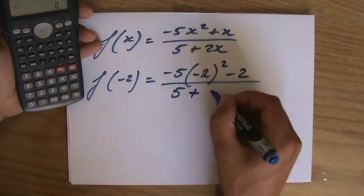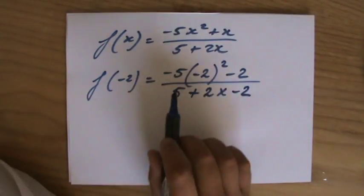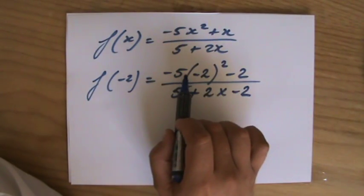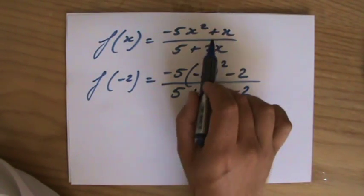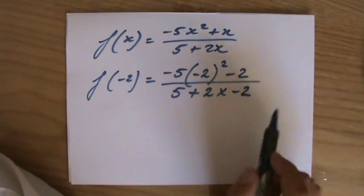That is a mistake I see every day, and it's so unnecessary. We don't need to calculate for that. Okay, so what did I do? I substituted minus 2 in my function, so minus 5 times minus 2 squared, plus minus 2, over 5 plus 2 times minus 2.